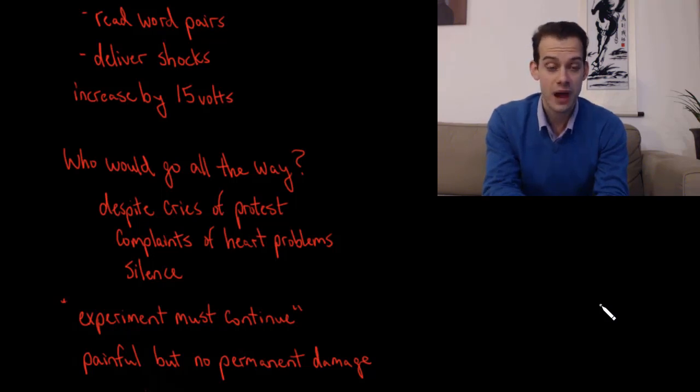And if the teacher wanted to stop the experiment and ask the experimenter if they could stop, the experimenter would tell the teacher that the experiment must continue or the experiment requires that you continue. And if they complained about the danger of the electric shocks, the experimenter would assure them that the shocks were painful but that they wouldn't cause any permanent damage to the learner.